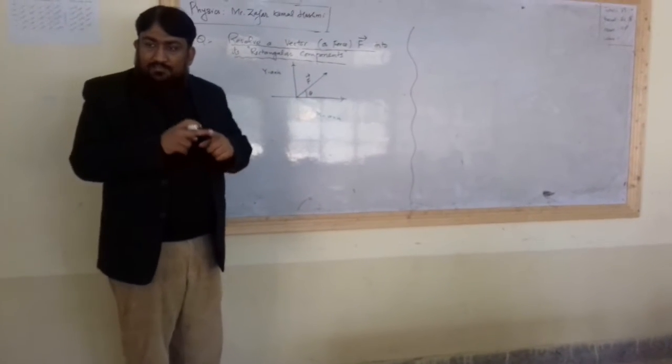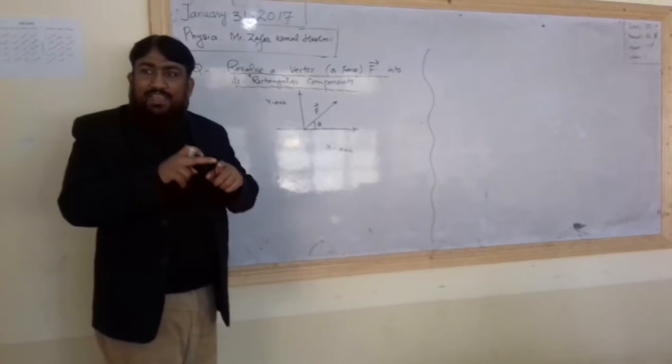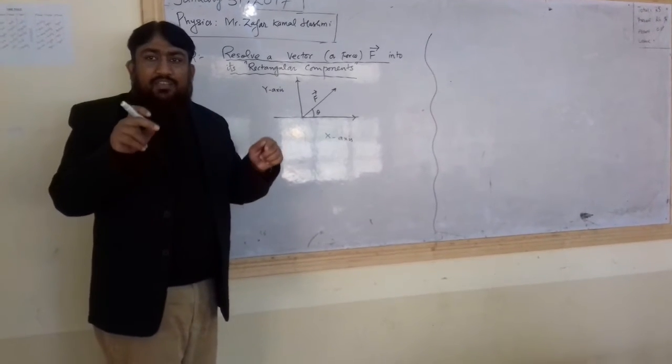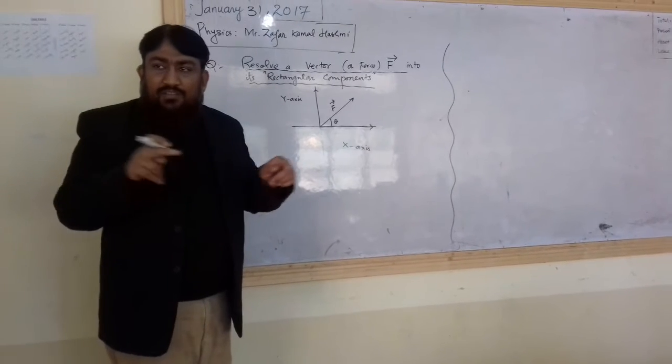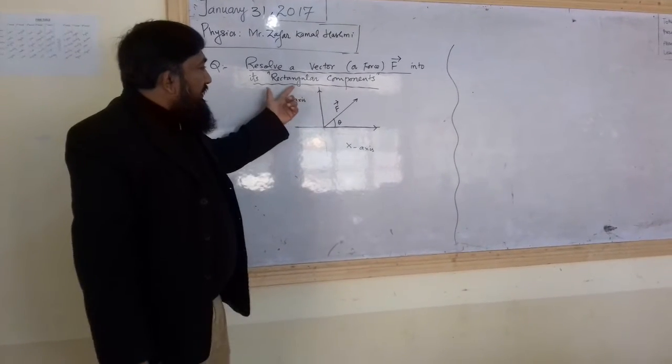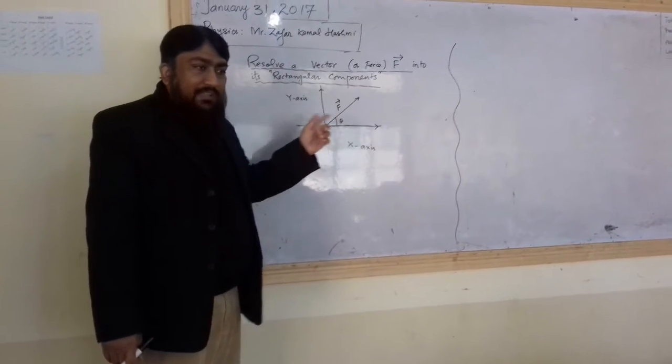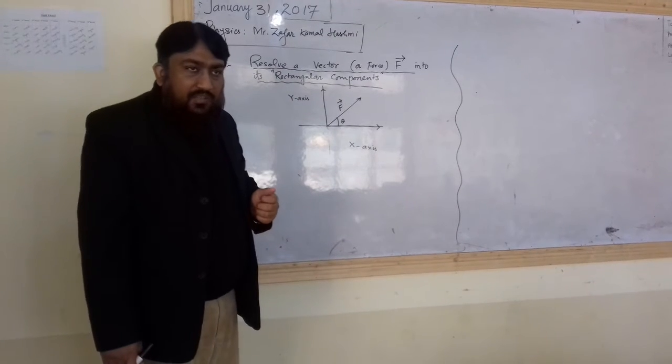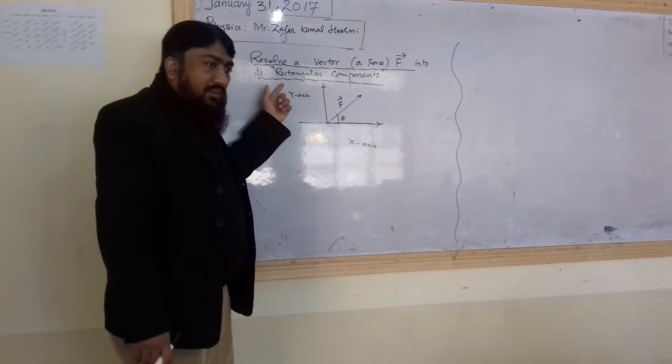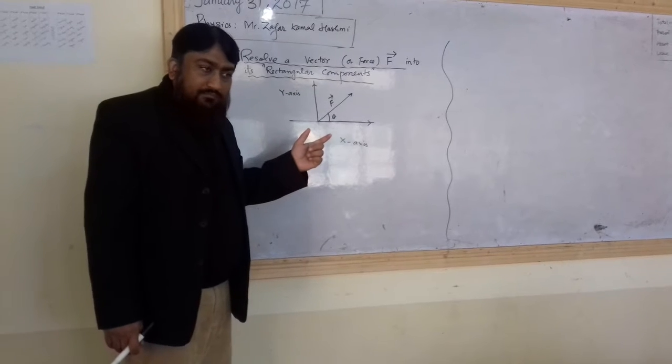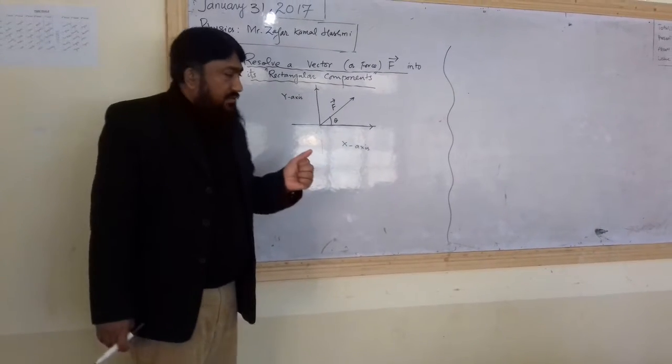You see rectangle? Yes, sir. What are the angles in the rectangle? Are they 60 degree, 80 degree or 90 degree? 90. So it means in rectangle, all the angles are of 90 degree. So it means the rectangular components, they would have an angle of 90 degree. Exactly.